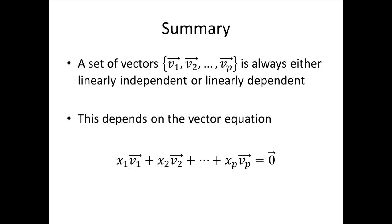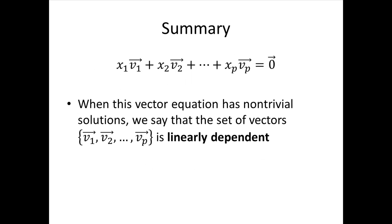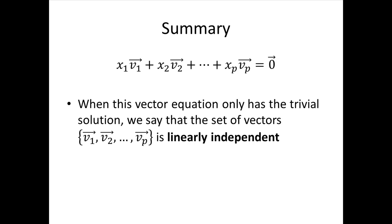So to summarize, a set of vectors is always either linearly independent or linearly dependent, and that depends on that vector equation. When that vector equation has non-trivial solutions, we say that the set of vectors is linearly dependent. When the vector equation only has the trivial solution, we say that the set of vectors is linearly independent.